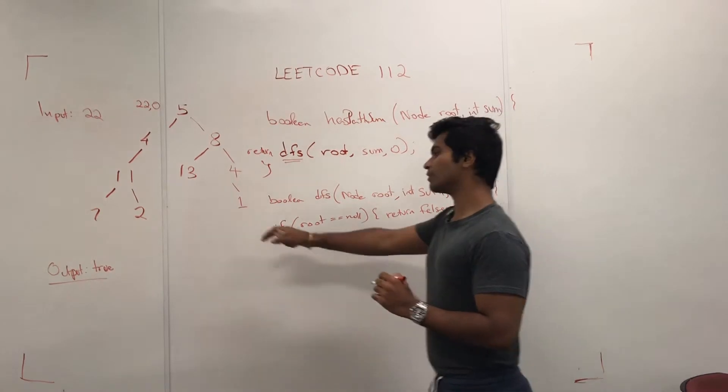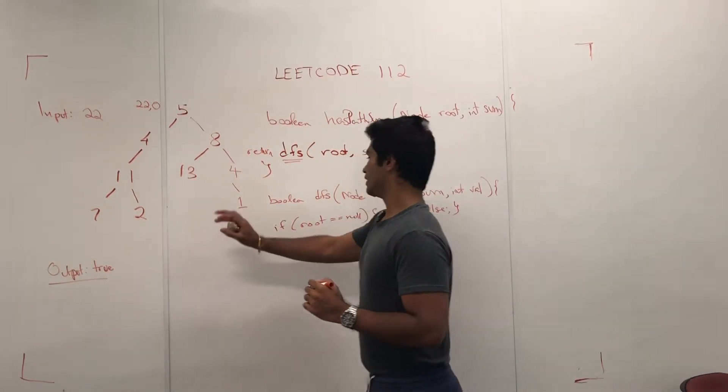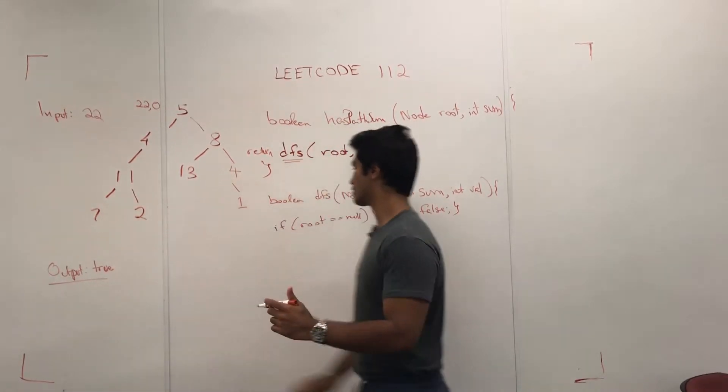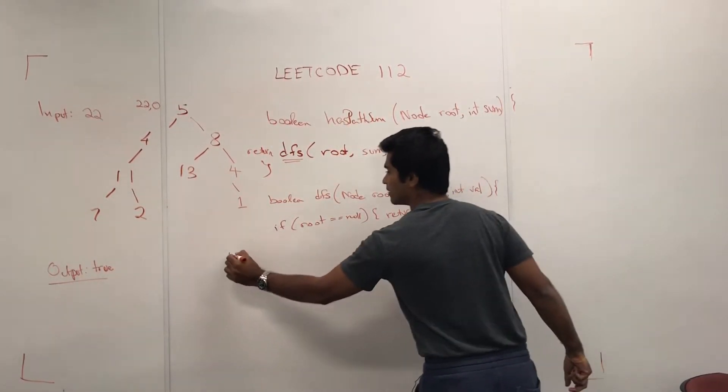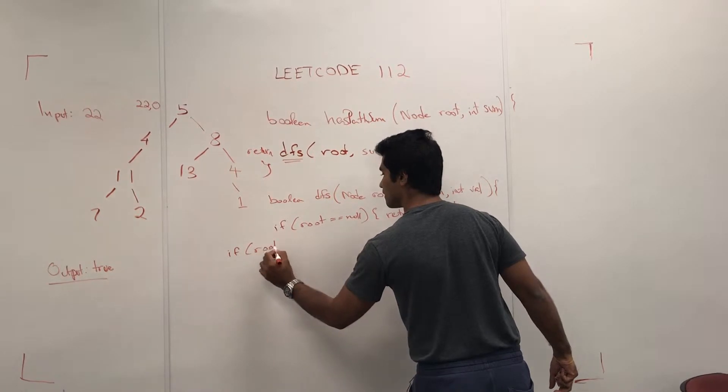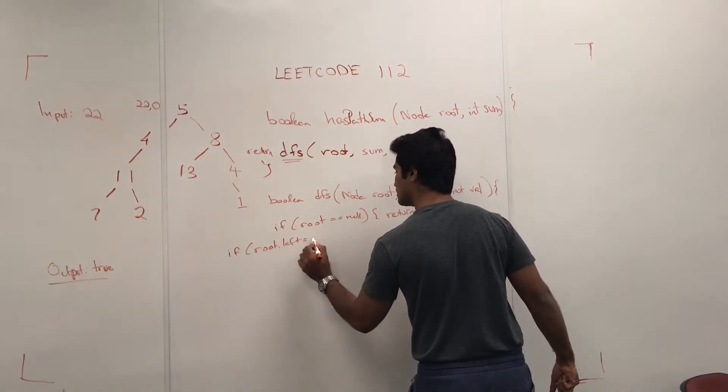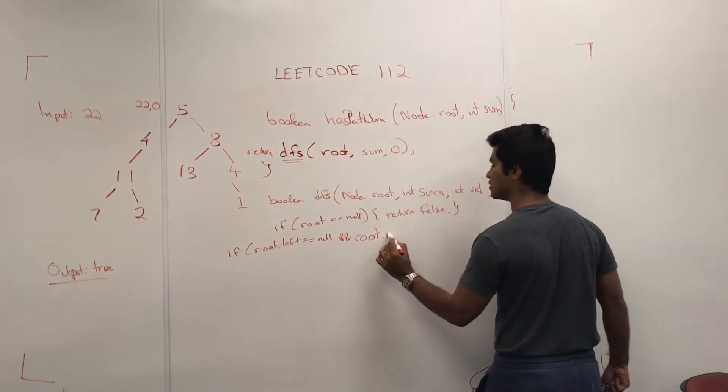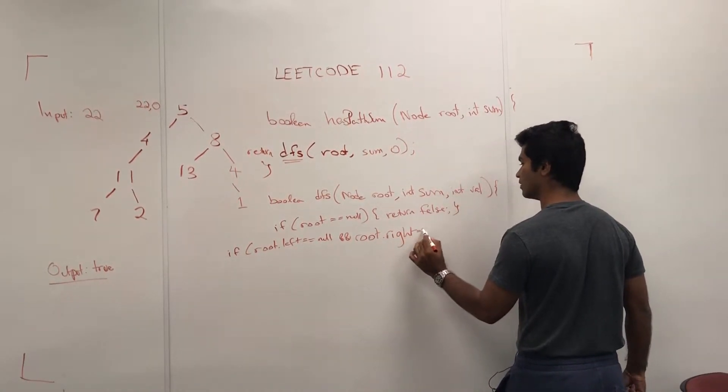Now the next thing we have to check is if we're visiting a leaf. So if the root left is null and the root right is null...